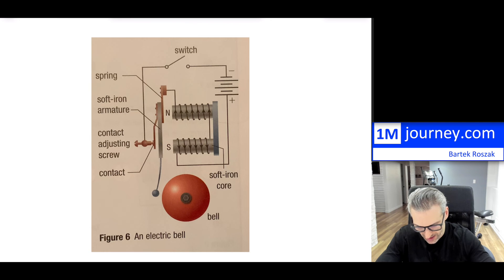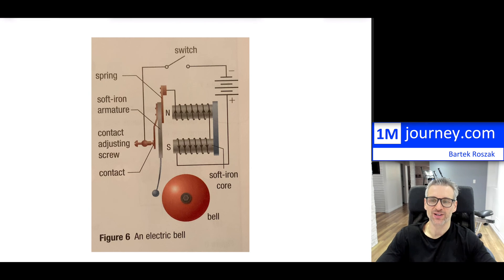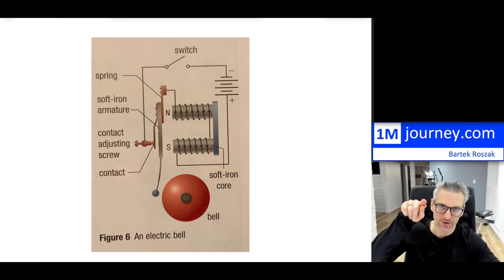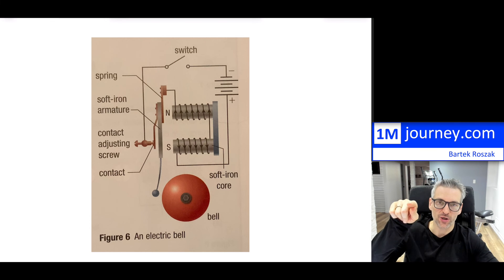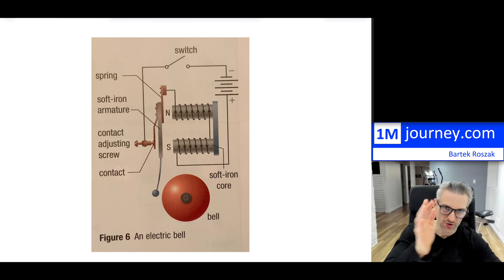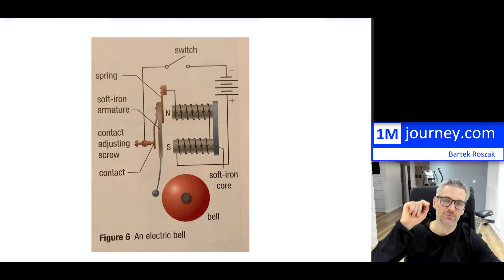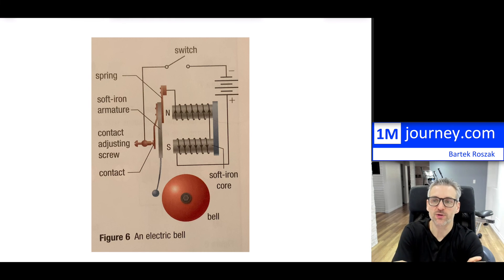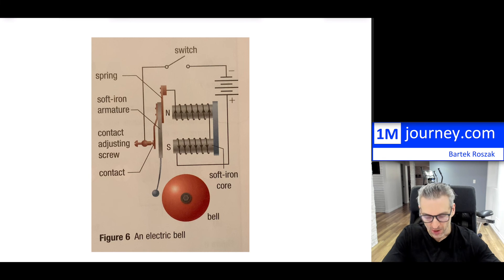When current flows, it creates a north and south pole in the solenoid. If one end is also north and the other south, they attract each other, swinging the clapper over to ring the bell. Pressing the doorbell holds the switch closed, allowing current to flow, activating the electromagnet, and making the bell ring.